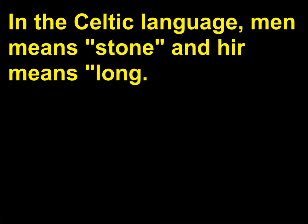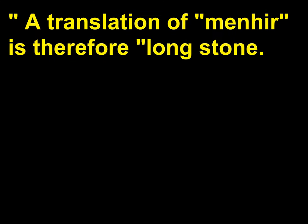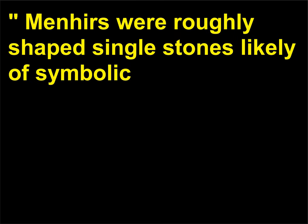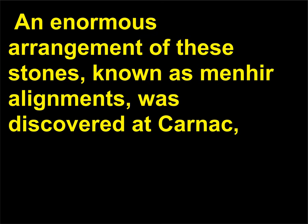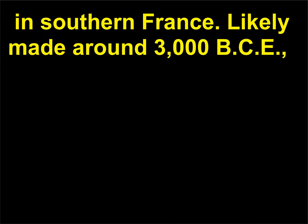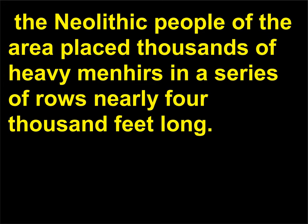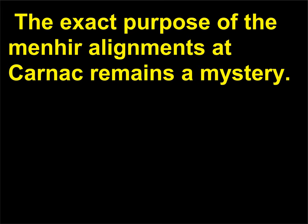What is a Menhir? In the Celtic language, 'men' means stone and 'hir' means long, so a translation of menhir is 'long stone.' Menhirs were roughly shaped single stones, likely of symbolic importance to the Neolithic people of Northern Europe who made them. An enormous arrangement of these stones, known as menhir alignments, was discovered at Carnac in southern France. Likely made around 3000 BCE, the Neolithic people of the area placed thousands of heavy menhirs in a series of rows nearly 4,000 feet long. The exact purpose of the menhir alignments at Carnac remains a mystery.